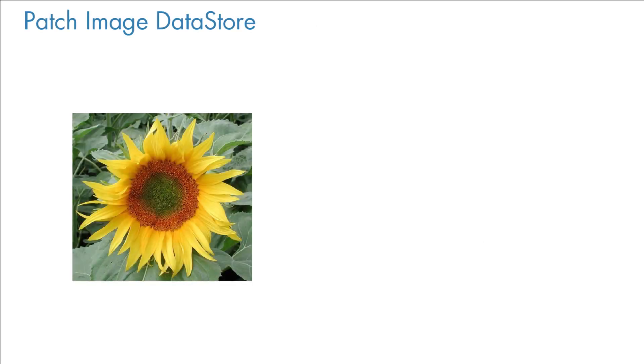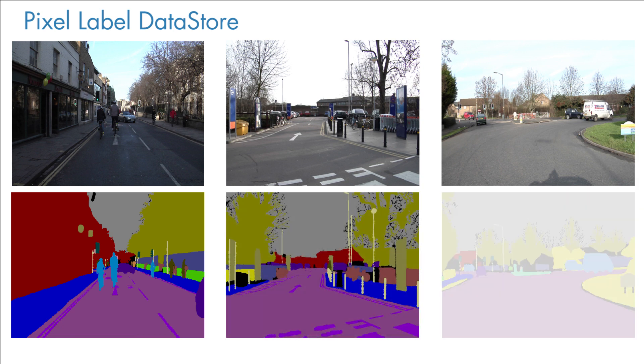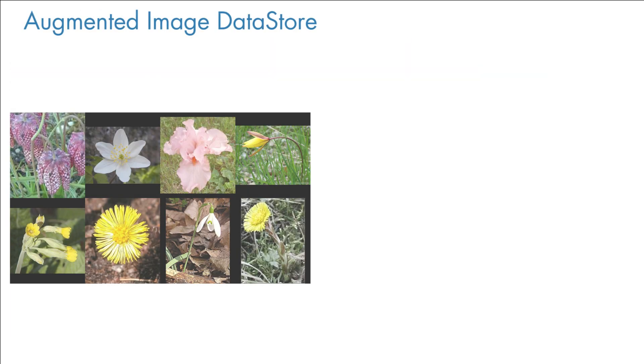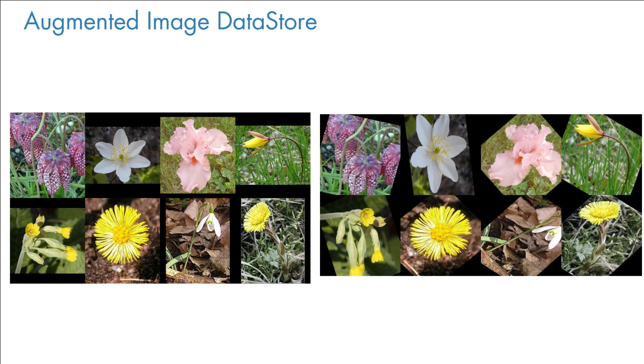Patch Image Datastore extracts random image patches to split up large images for deep learning workflows. Pixel Label Datastore conveniently stores pixel information for semantic segmentation data. Augmented Image Datastore creates training samples from your existing data, providing even more data for training. And if you have something else in mind, you can create a custom Datastore to handle specific tasks like sequence or time series data.